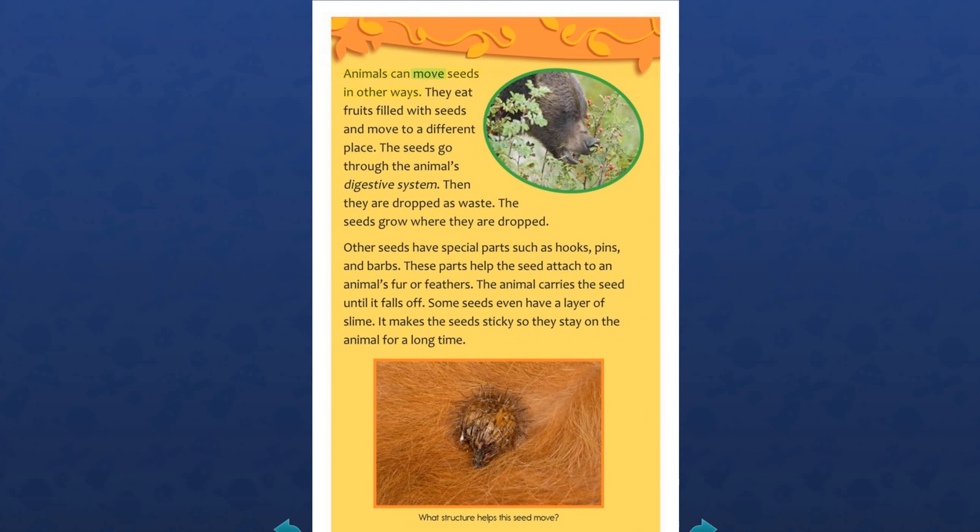Animals can move seeds in other ways. They eat fruits filled with seeds and move to a different place. The seeds go through the animal's digestive system. Then they are dropped as waste. The seeds grow where they are dropped. Other seeds have special parts, such as hooks, pins, and barbs. These parts help the seed attach to an animal's fur or feathers. The animal carries the seed until it falls off. Some seeds even have a layer of slime. It makes the seeds sticky, so they stay on the animal for a long time.